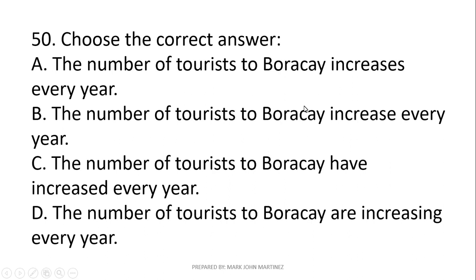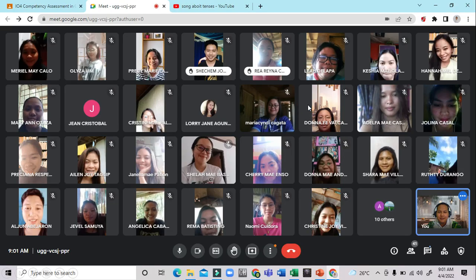Last question: Choose the correct answer — 'The number of tourists to Boracay increases every year.' The correct answer is letter A: 'increases,' using the singular verb, because 'the number of' takes a singular verb. Thank you so much for watching and listening. I hope you have learned something in this rationalization of your unit test in English. Goodbye and thank you.